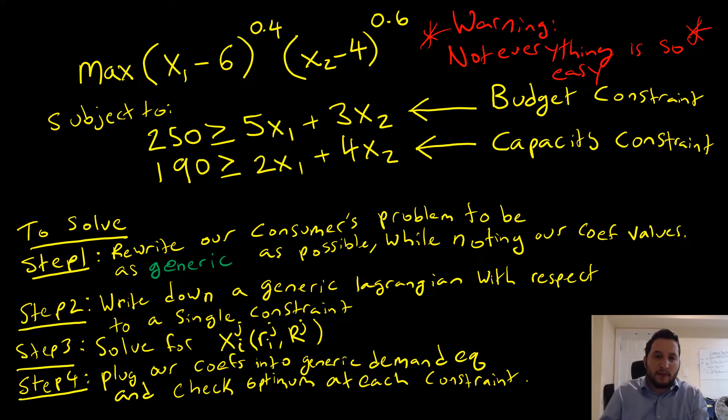In this video, we're going to be discussing maximizing Stone Gary preferences where we have actual numbers subject to two constraints. We're going to call it a budget constraint and a capacity constraint being the second one. The actual story doesn't really matter here. We're just going to work with the computation.